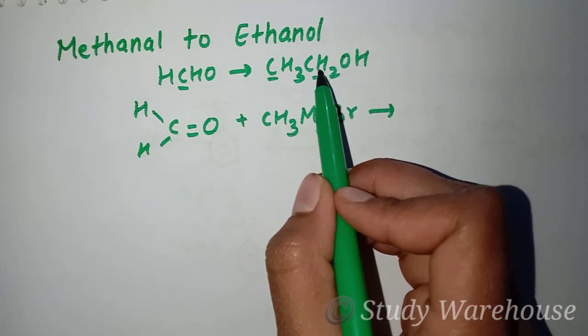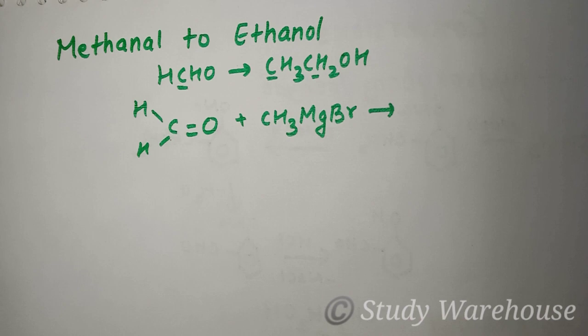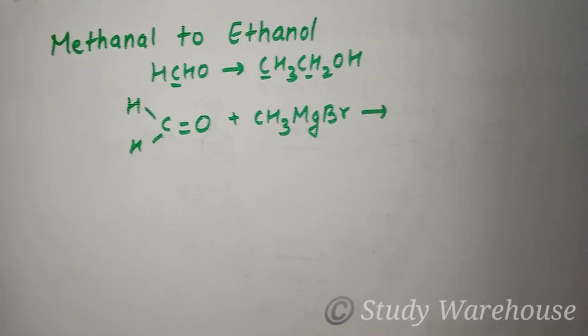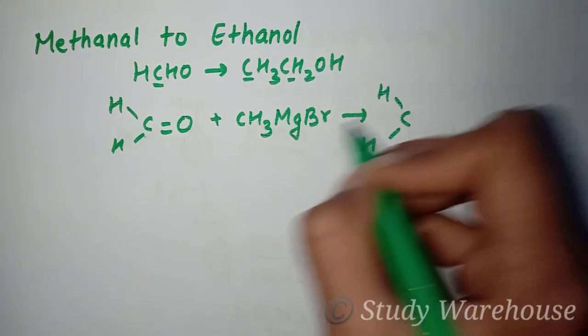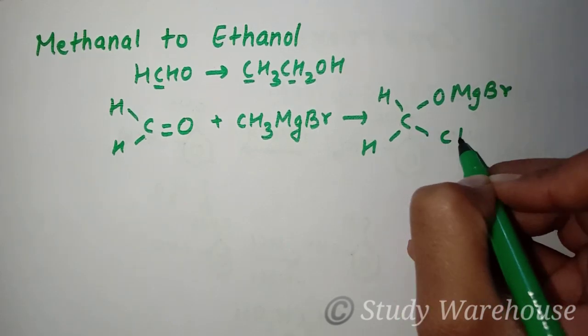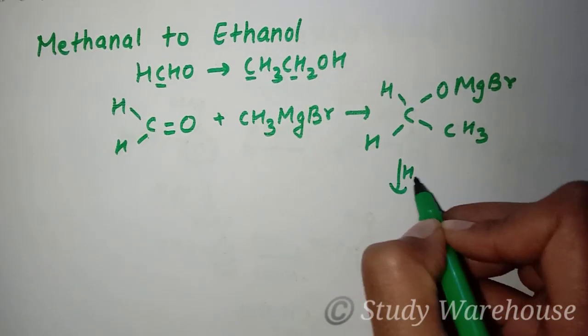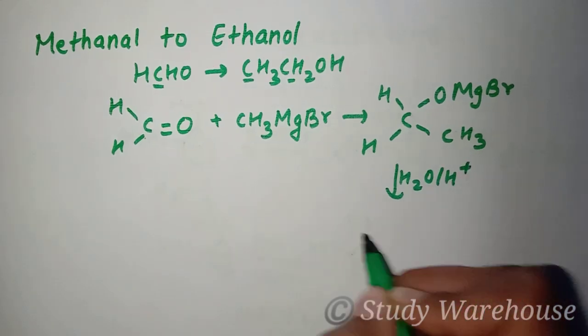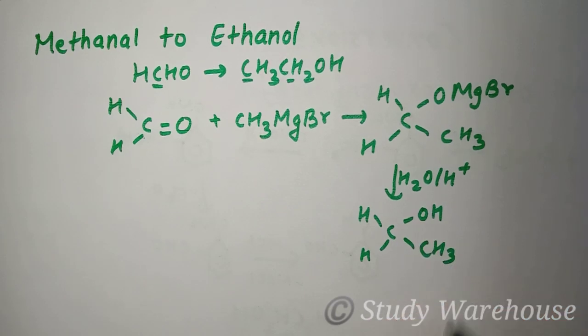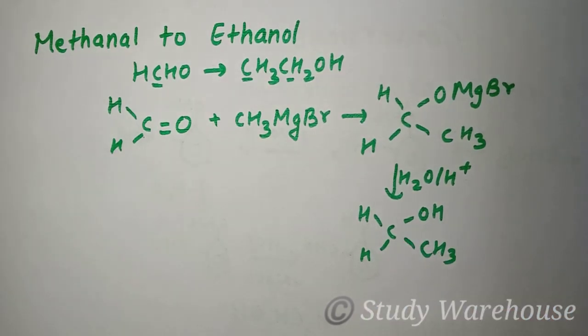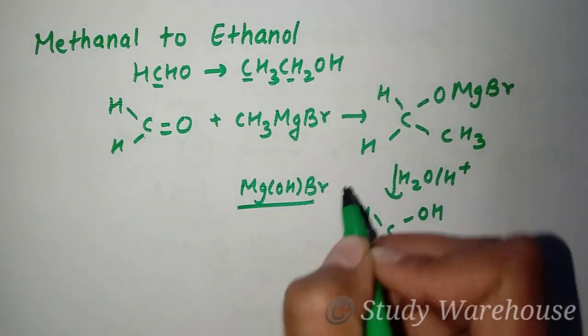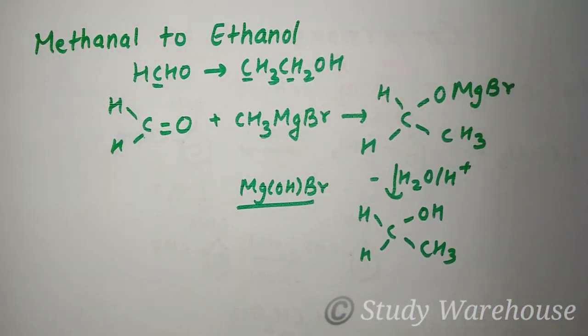If we have propanol, then we need three carbons. So here we use two carbons. If we react, this will attach O-MgBr and CH3 here. After that, we do acidic hydrolysis. When we do acidic hydrolysis, here OH and here CH3 will change to CH3CH2OH, and here MgOHBr.